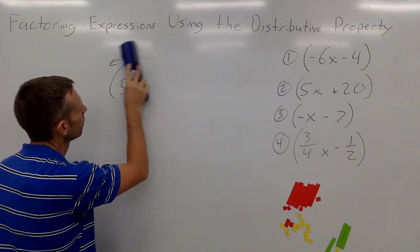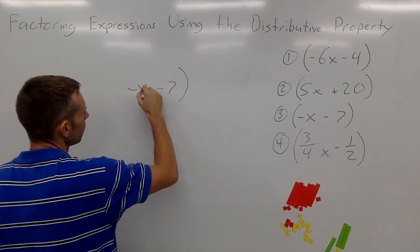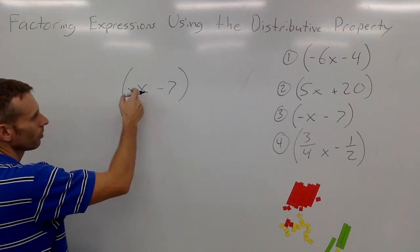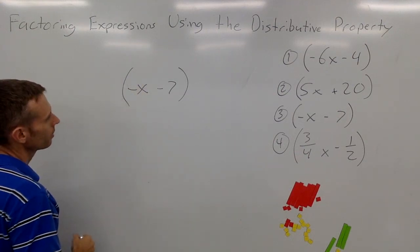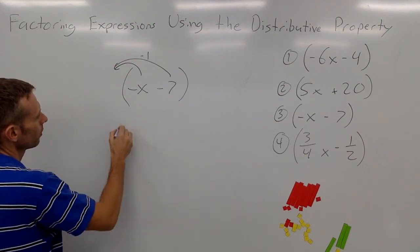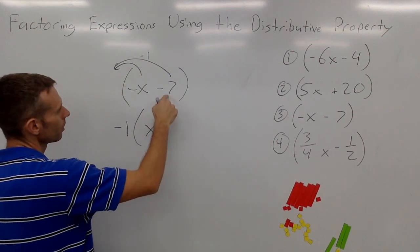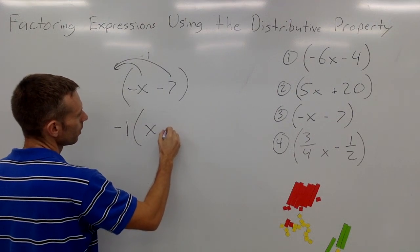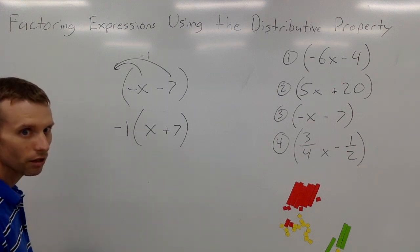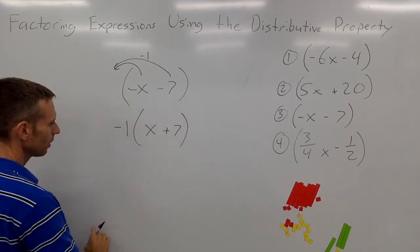Let's do another one. Here we have negative x and negative 7. There's no coefficient here, so there's no number. The best that we can do is to factor out negative 1. If we factor out a negative 1, negative x divided by negative 1 is positive x, and negative 7 divided by negative 1 is positive 7. It's always good to go back and check your answer — negative 1 times x is indeed negative x, and negative 1 times 7 is indeed negative 7.